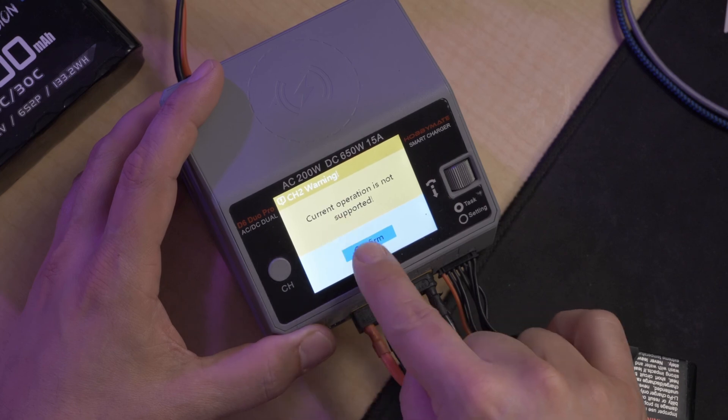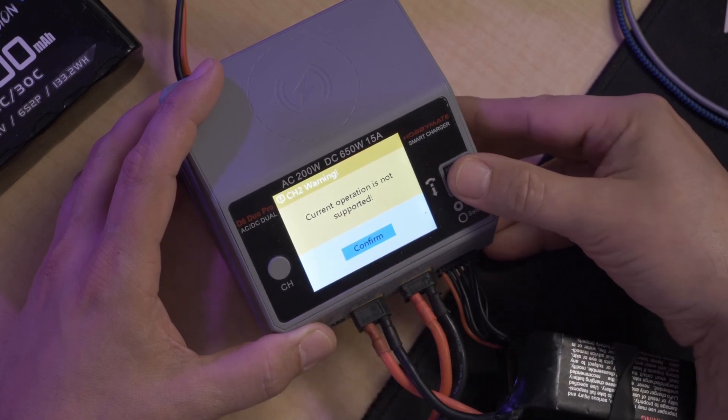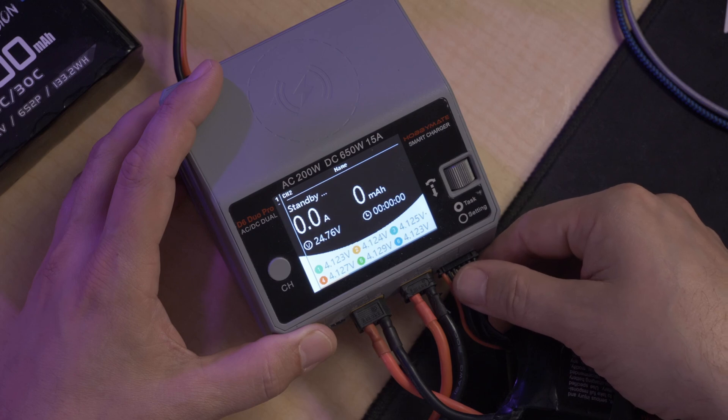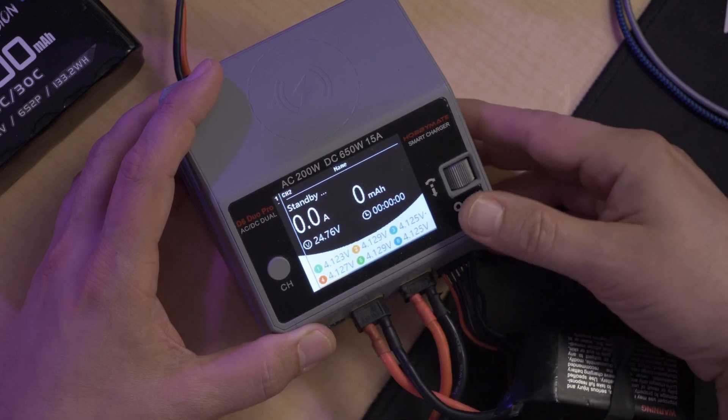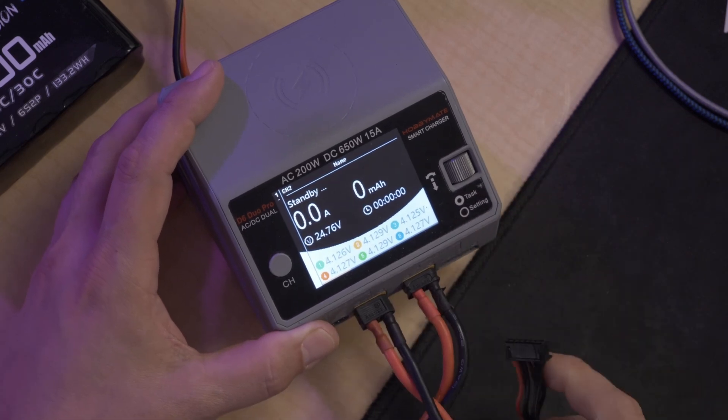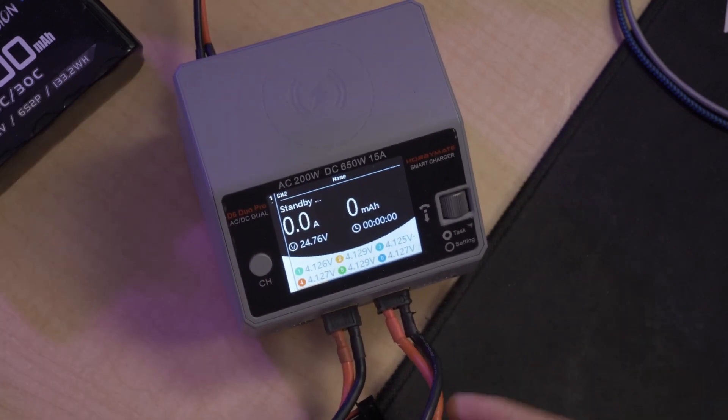Ah yeah, there you go. 'Current operation is not supported.' I would have liked a more... you started battery too? Yeah, because you're seeing all the cells. I started the right battery. My understanding is it will do that as long as the balance doesn't match the XT60.